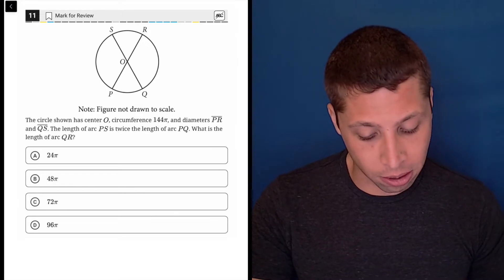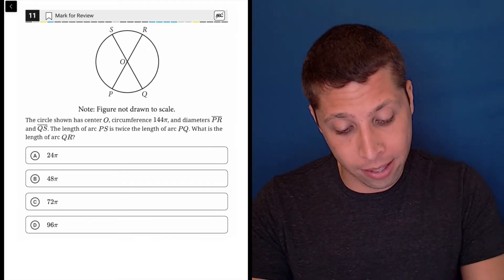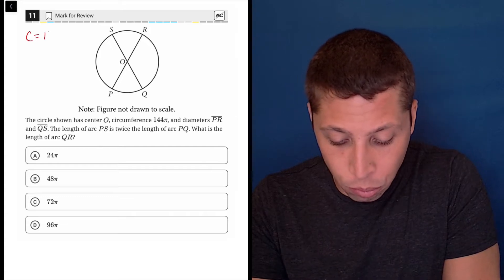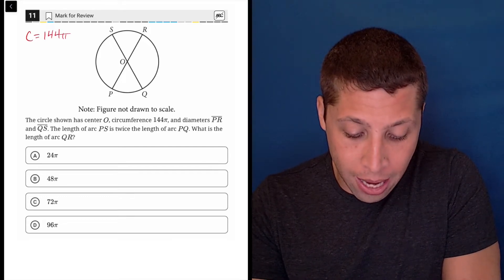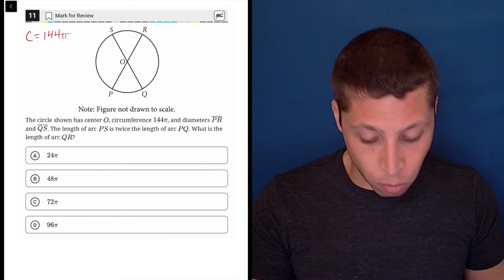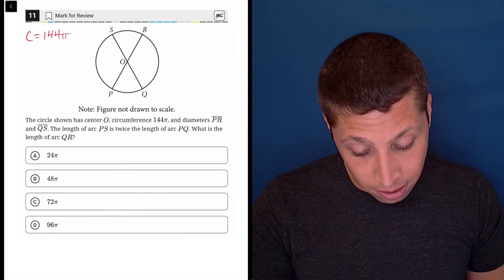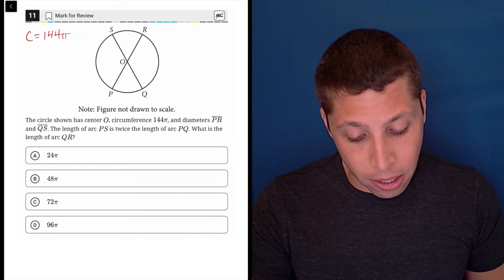The circle has this center. The circumference is 144π, so that's probably important. C equals 144π, and diameters PR and QS, the length of arc PS is twice the length of PQ.